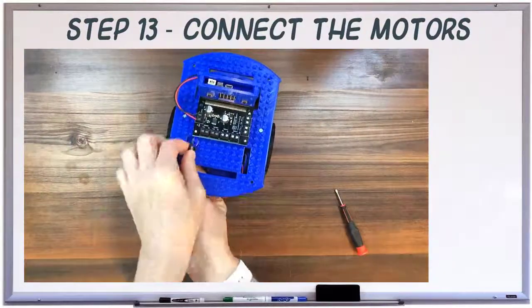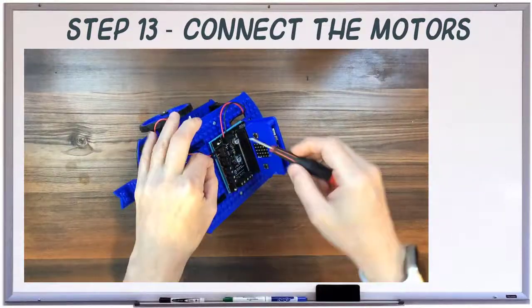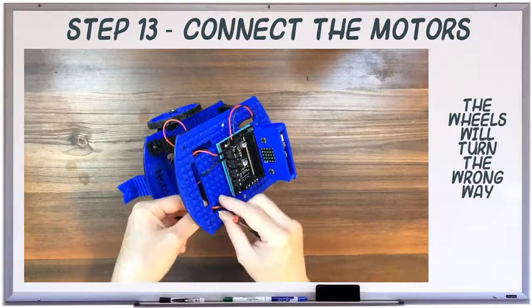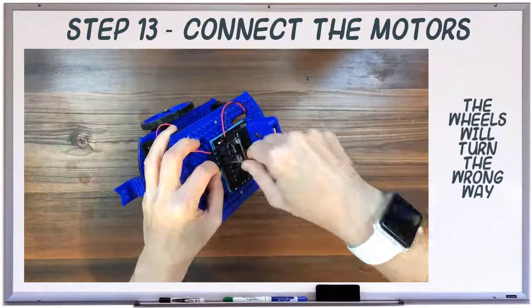Run the motor wires up through the top layer and screw them into the motor 1 and motor 2 terminals. They should be ordered red, black, black, red as shown. If you get them mixed up, don't worry, you won't hurt anything. Your wheels will just turn the opposite way.